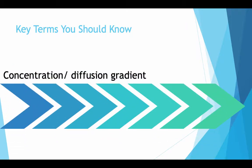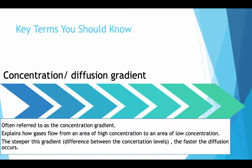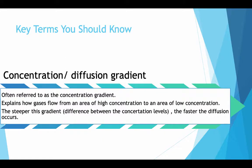Key terms you should know: concentration diffusion gradient, often referred to as the concentration gradient. It explains how gases flow from an area of high concentration to an area of low concentration. The steeper the gradient, the faster the diffusion occurs.